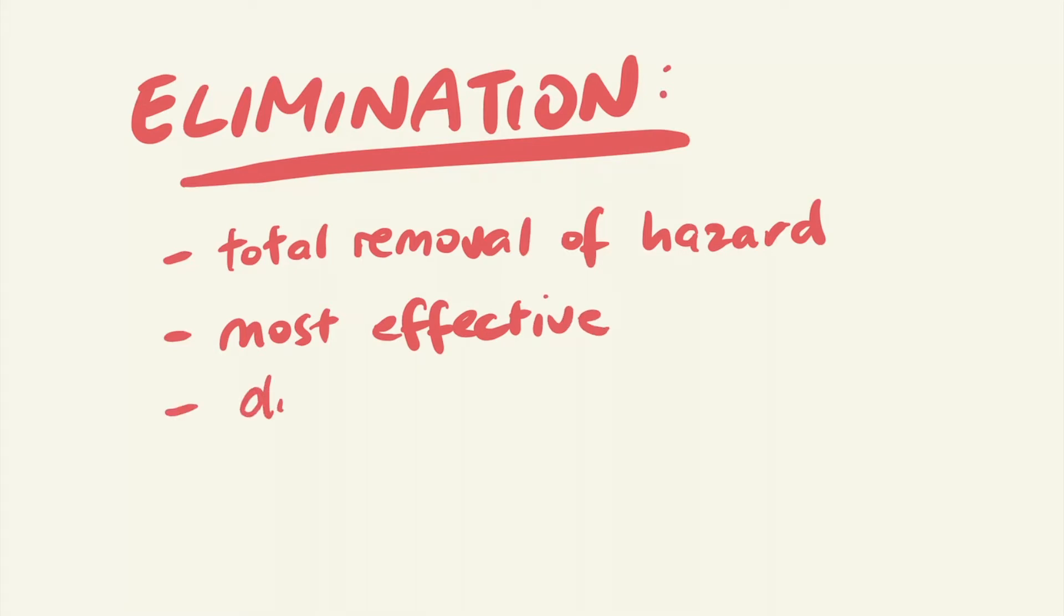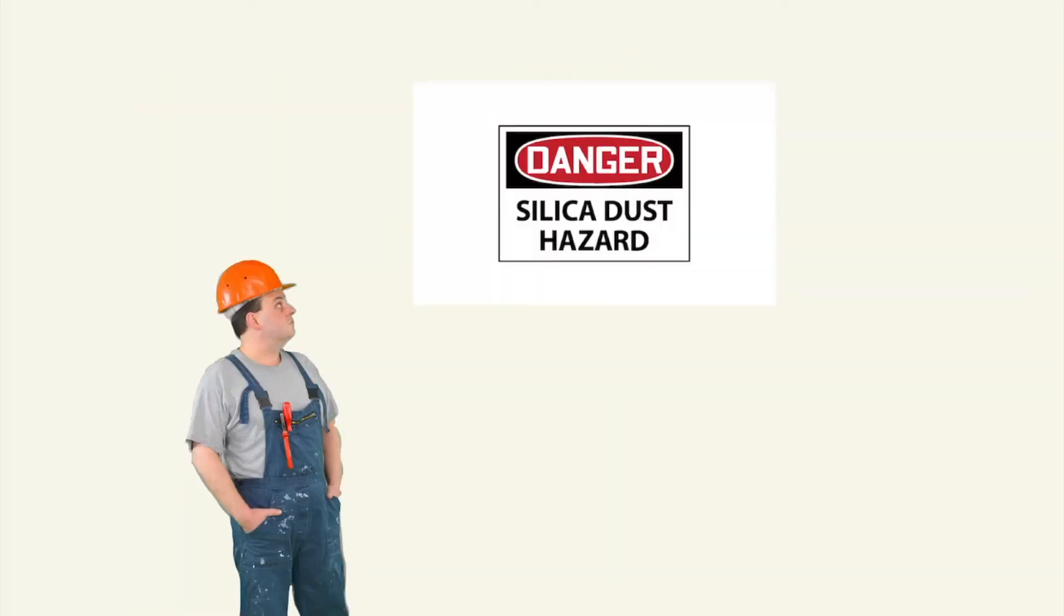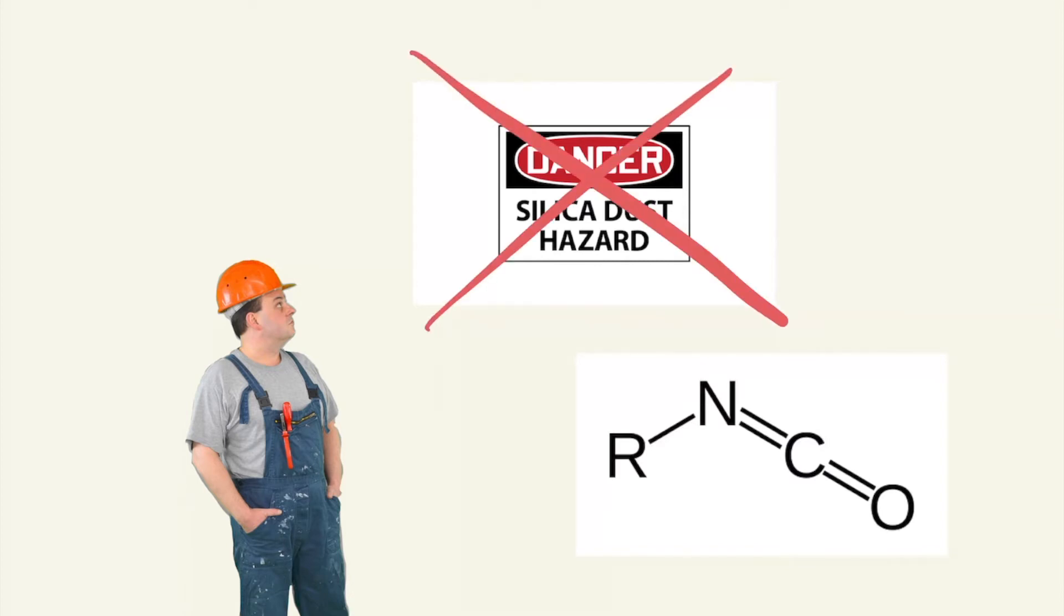It can, however, be the most difficult to implement, as the hazard may be a critical part of the process or end product. So for Bob, who may work with hazardous materials such as silica or chemicals such as isocyanates, these cannot be easily removed as they are inherent in the end product that he is making. If this is the case, then we must go down the hierarchy of controls to look for the next best control type.